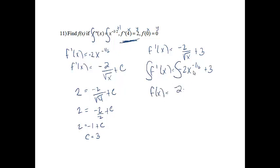On this one, if I increase my power by 1, I'll get x to the 1 half times the reciprocal up front, which will be 2. And then plus the integral of 3 is 3x. So if I rewrite this, I will get negative 4 square root of x plus 3x, plus c again.